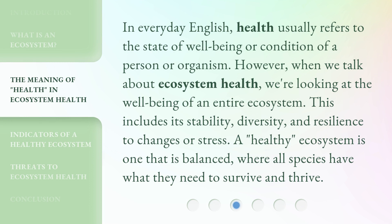In everyday English, health usually refers to the state of well-being or condition of a person or organism. However, when we talk about ecosystem health, we're looking at the well-being of an entire ecosystem. This includes its stability, diversity, and resilience to changes or stress. A healthy ecosystem is one that is balanced, where all species have what they need to survive and thrive.